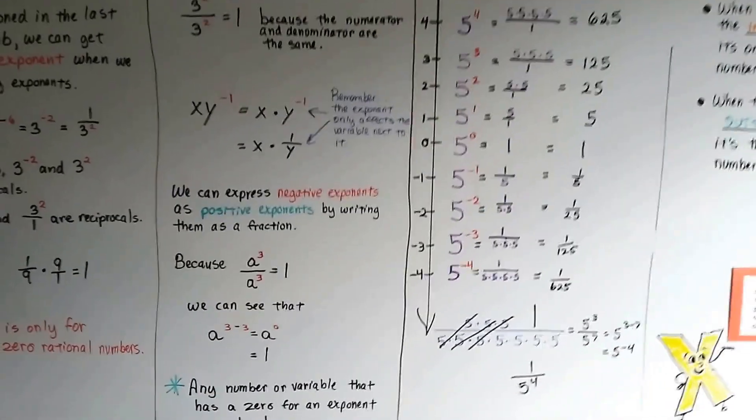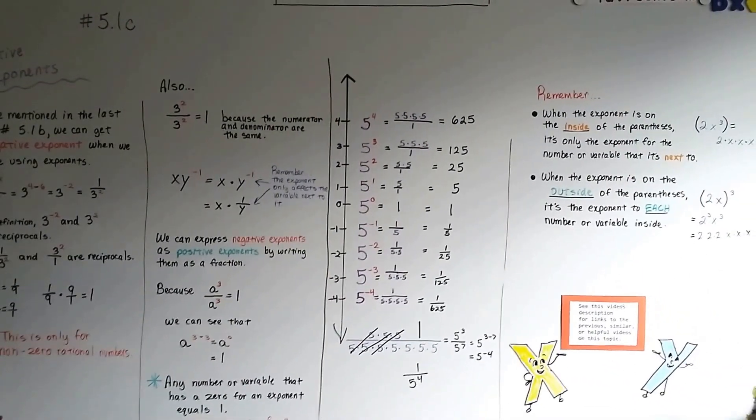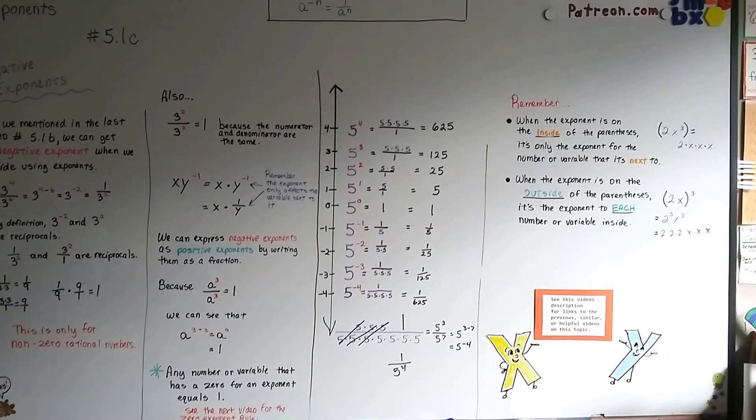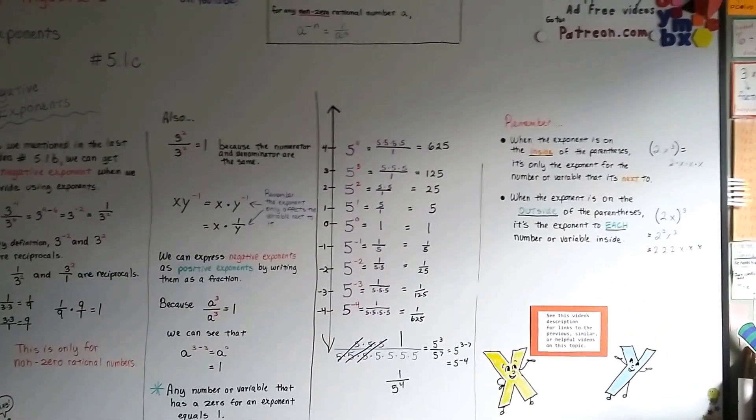Alright, so we're going to move on to 5.1d, and we're going to talk about the zero exponent rule. I hope you're doing okay. I hope I explained this well enough. I know this can be confusing, but hang in there. We'll do this. We'll be alright. Bye.